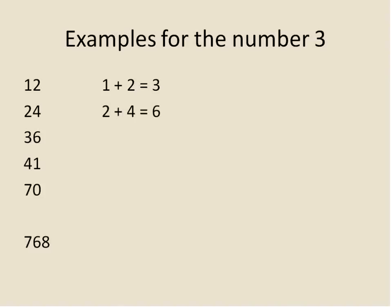24: 2 plus 4 is 6, and 6 is divisible by 3, therefore 24 is also divisible by 3. 36: 3 plus 6 is 9, and 9 is divisible evenly by 3, therefore 36 is also divisible by 3. Now let's look at a couple that are not divisible by 3. 41: 4 plus 1 is 5, and 5 is not divisible by 3, so it's not going to work. 70: 7 plus 0 is 7, and 7 is not divisible by 3, therefore 70 is also not divisible by 3.